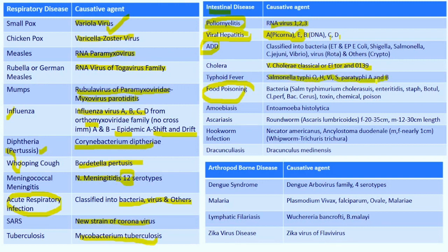Food poisoning is caused by bacteria such as Salmonella typhimurium, Salmonella choleraesuis, and S. enteritidis for salmonellosis; Staphylococcus; Botulism; Clostridium perfringens; Bacillus cereus. It may be due to bacteria, toxin, chemical, or poison. Amoebiasis is caused by Entamoeba histolytica. Ascariasis by Ascaris lumbricoides. Hookworm infection by Necator americanus or Ancylostoma duodenale. Whipworm (Trichuris trichura) is also under soil-transmitted helminths — along with Ascariasis and Hookworm infections. Dracunculiasis is caused by Dracunculus medinensis.